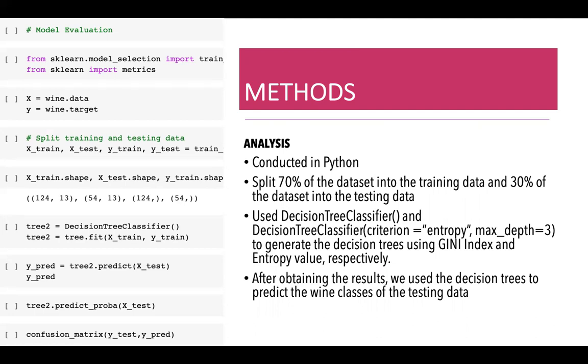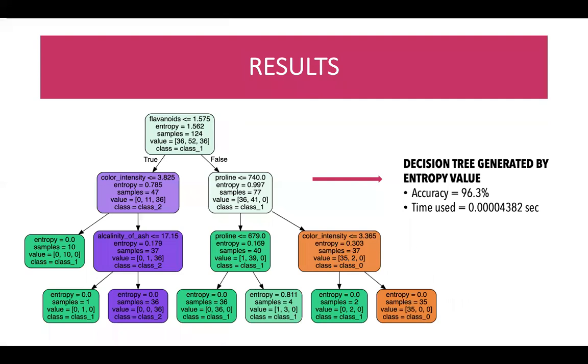This is the first tree that we generated using the entropy value. As we can see from the slide, flavonoids among all the attributes has the highest entropy value on the first iteration. Therefore, it is placed at the root node of the tree.